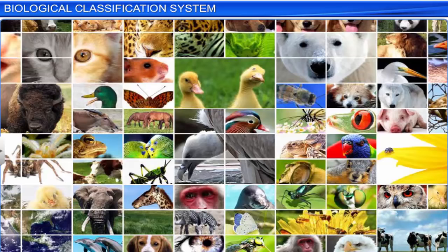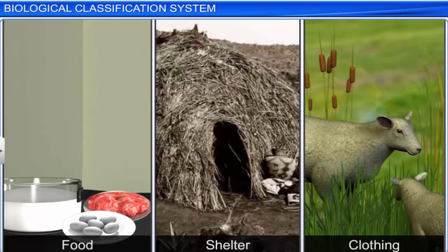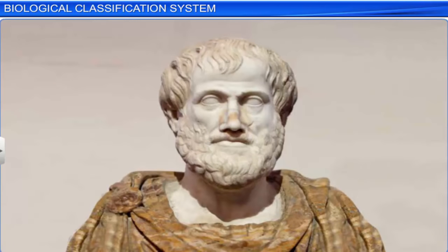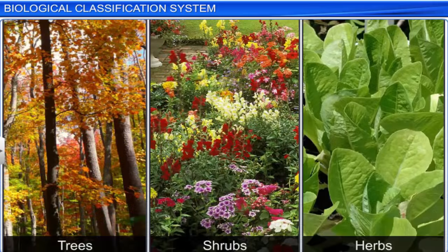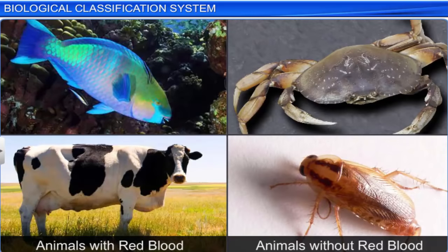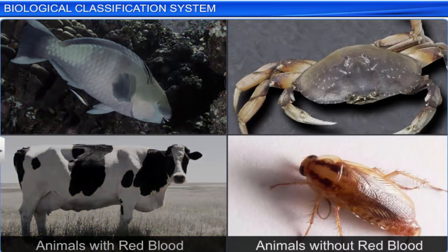The attempts to classify living organisms began centuries ago. The first classifications were made to identify organisms that were useful to man for food, shelter, and clothing. It was Aristotle who devised the first scientific method of classification. Based on morphological characters, he classified plants into trees, shrubs, and herbs, and animals into two groups: those that had red blood and those that didn't.